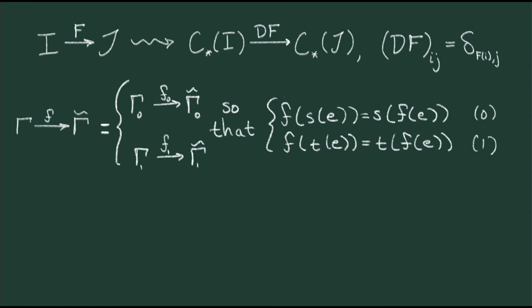A map f from gamma to gamma-tilde is two pieces of data: a map between their set of vertices and a map between their set of edges. These two maps must interact in a very particular way. Namely, f evaluated on the source of an edge e must coincide with the source of f(e). Similarly, f evaluated on the target of an edge e must coincide with the target of f(e). Note that these conditions give something akin to a finite criterion for continuity, as failing to satisfy this condition is like saying you're ripping an edge in half. Ripping is definitely not continuous.